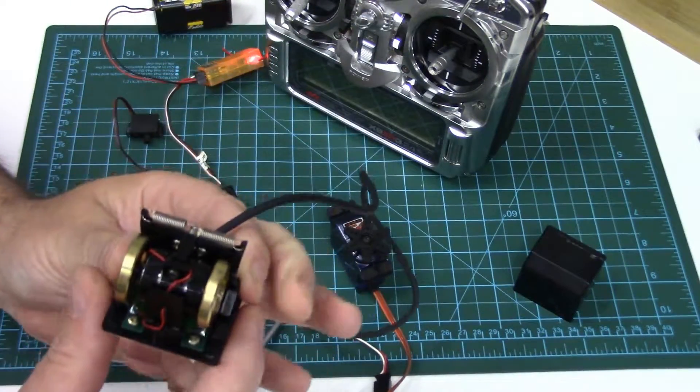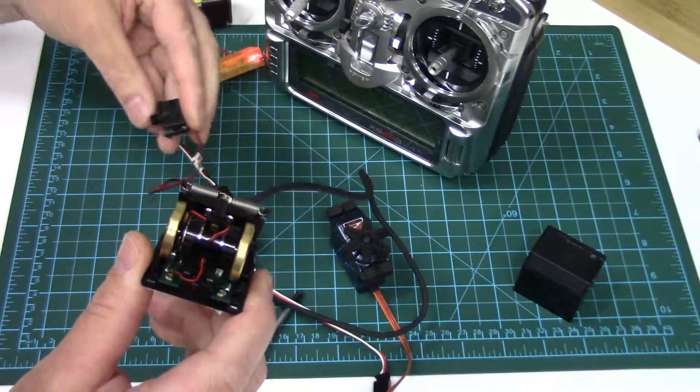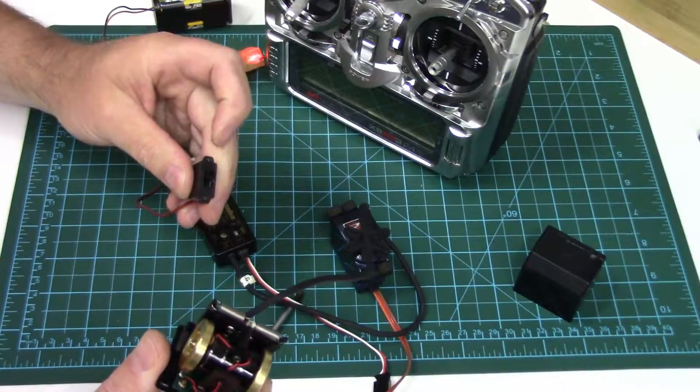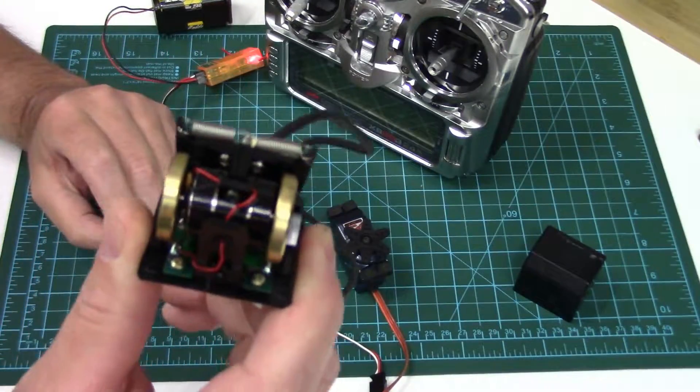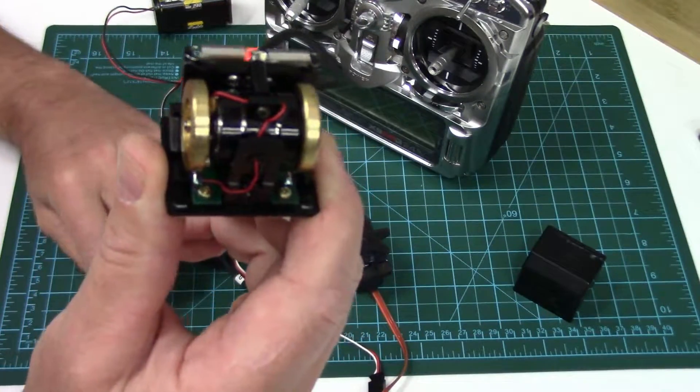So the other part of these mechanical gyros, they generally add an on and off switch because they use quite a bit of current. When they're turned on you'll probably hear this thing spool up when I turn it on. You won't really see it.